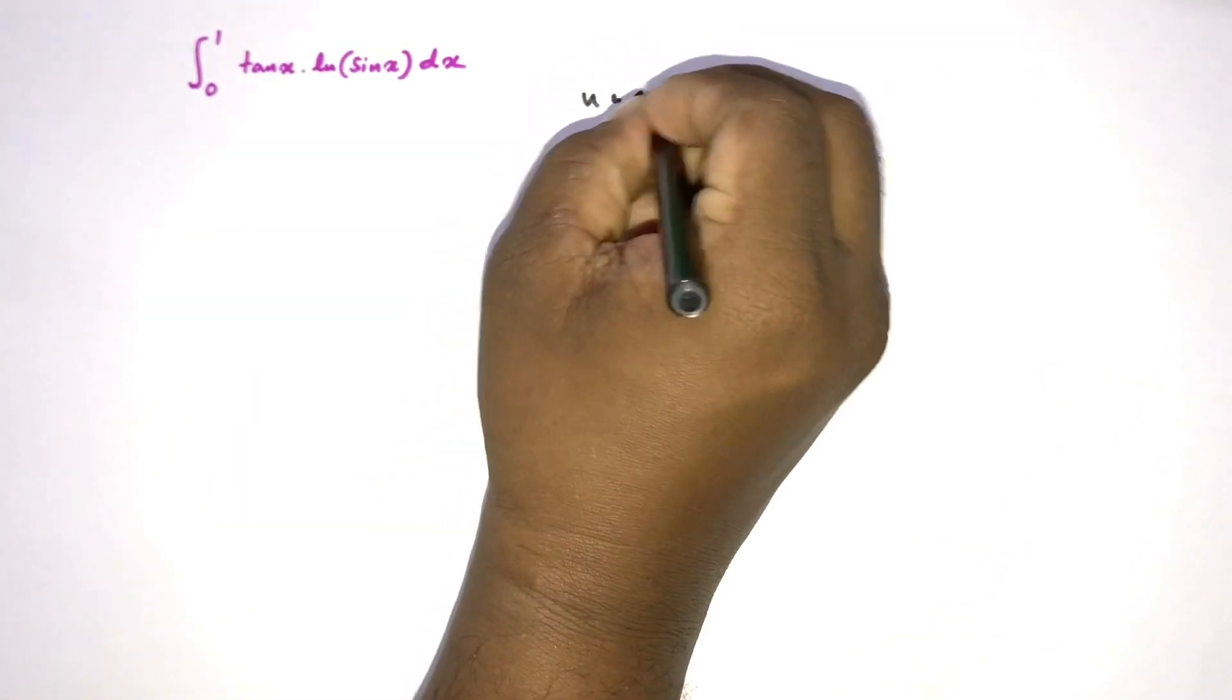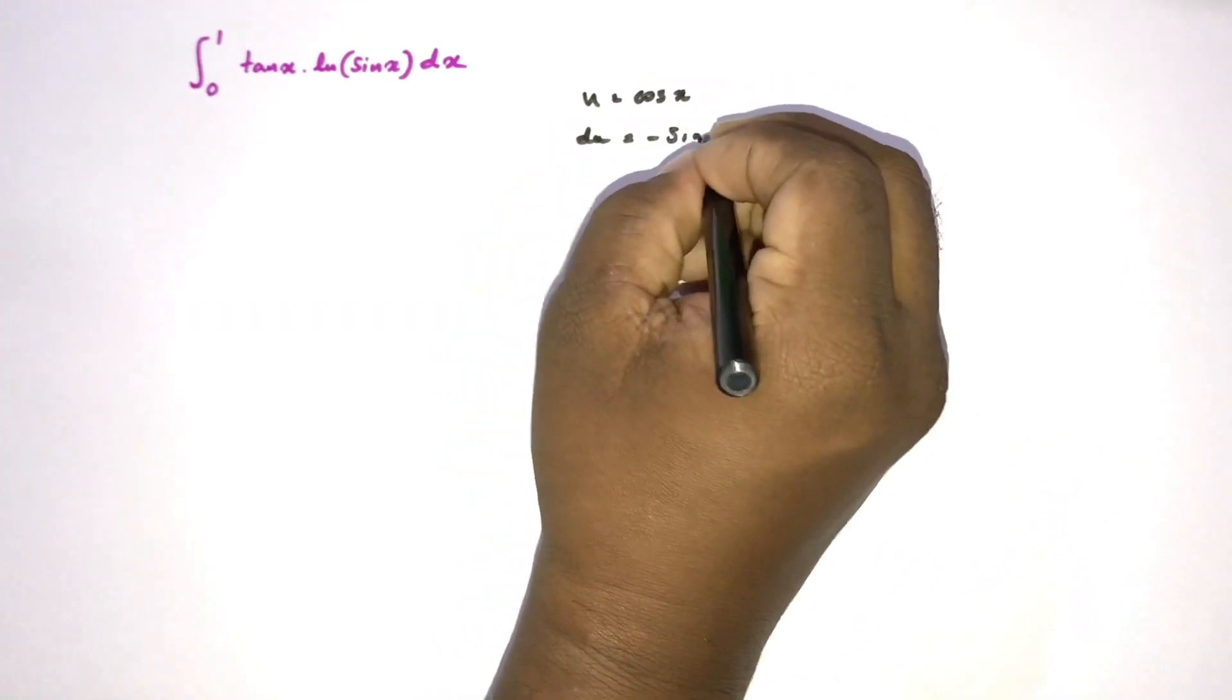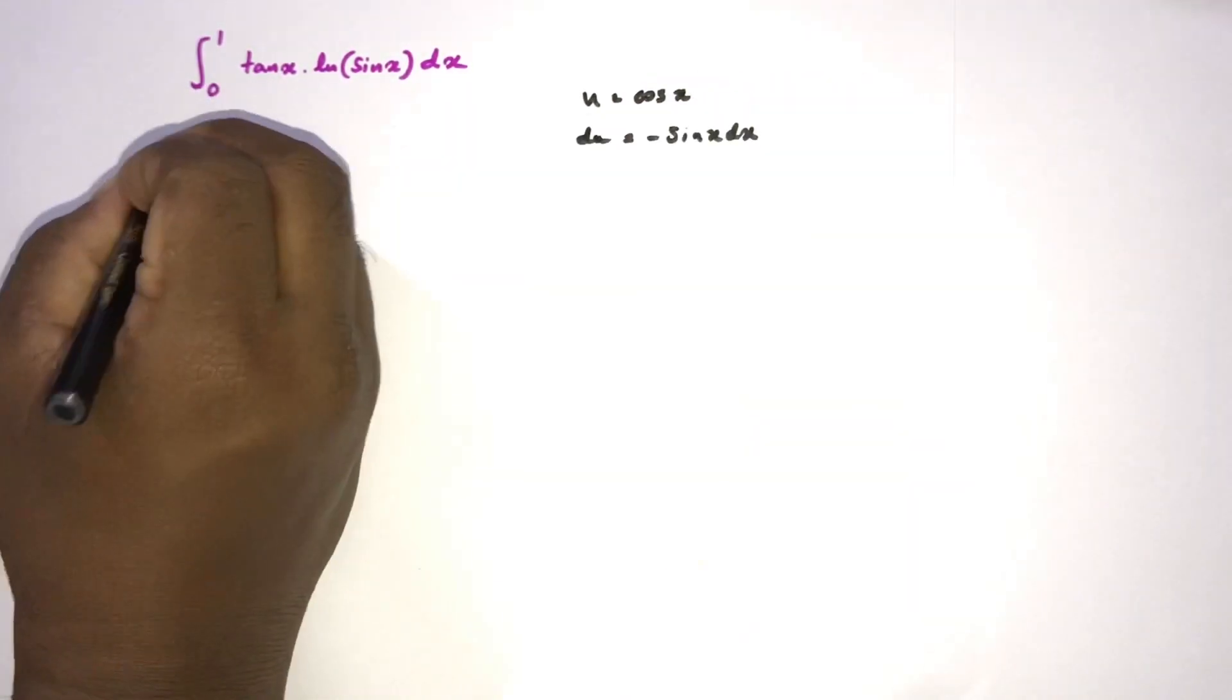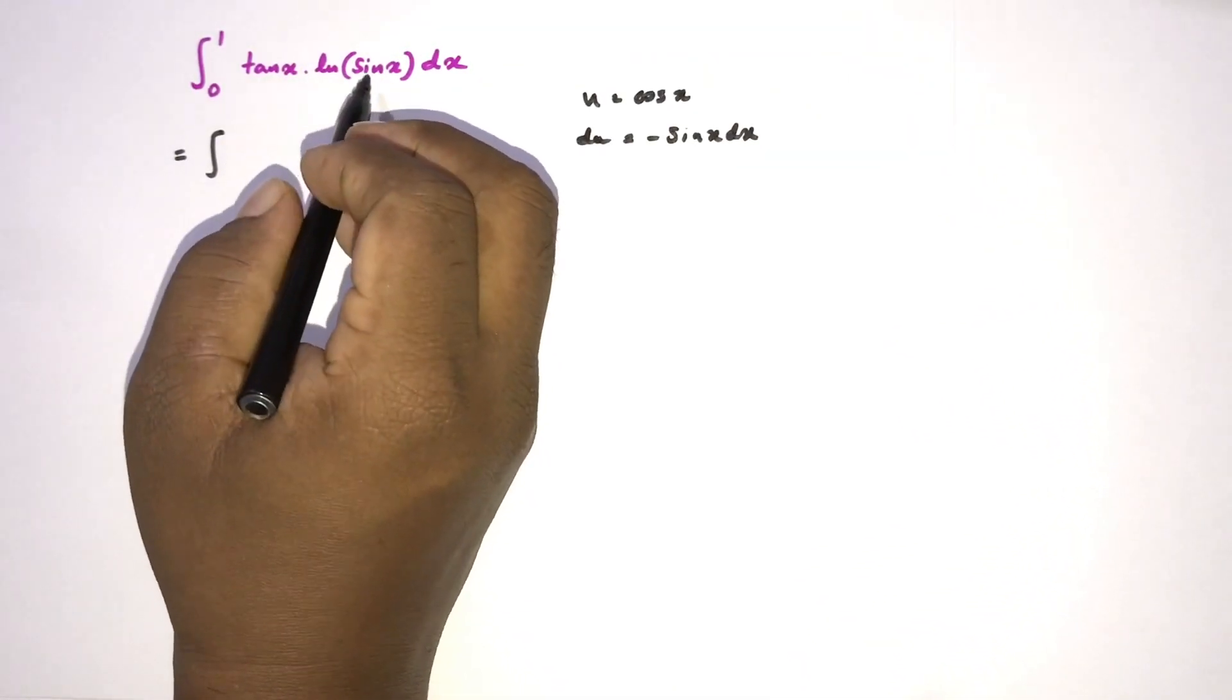So first I'm going to take a substitution: u equals cosine of x, then du equals minus sine of x dx. Now we can write here natural log of sine of x.